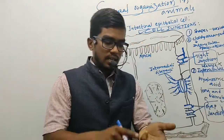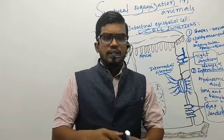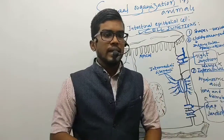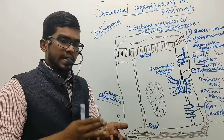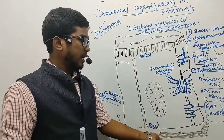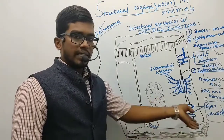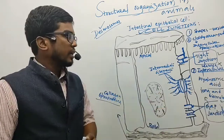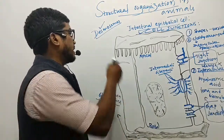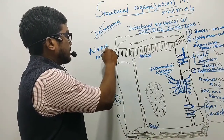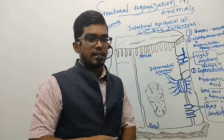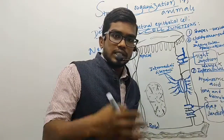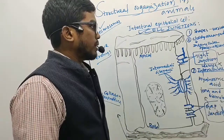Epithelial cells are non-vascular — there are generally no blood vessels found in these tissues. Their nutrition is obtained from blood capillaries present in the underlying connective tissues. However, they do have nerve endings which enter into the epithelial tissues, so sensations can be felt. The free surface of these epithelial tissues can be either smooth or made up of finger-like projections called cilia or microvilli.